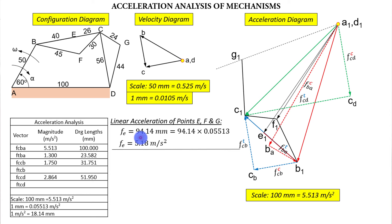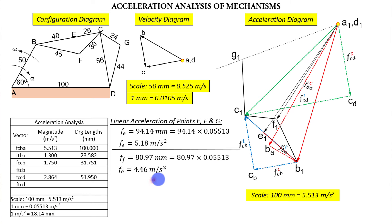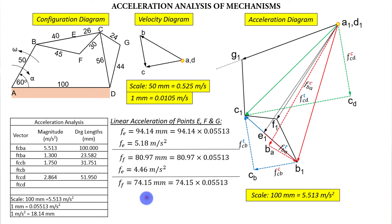For point G: join G1 to the fixed point and measure — this gives 74.15 mm. Multiply by 0.055 to get approximately 4.08 m/s². So everything becomes very easy once the diagrams are made. The calculations are simple — the hard part is making the configuration diagram, the velocity diagram, and the strenuous acceleration diagram with fine judgment.